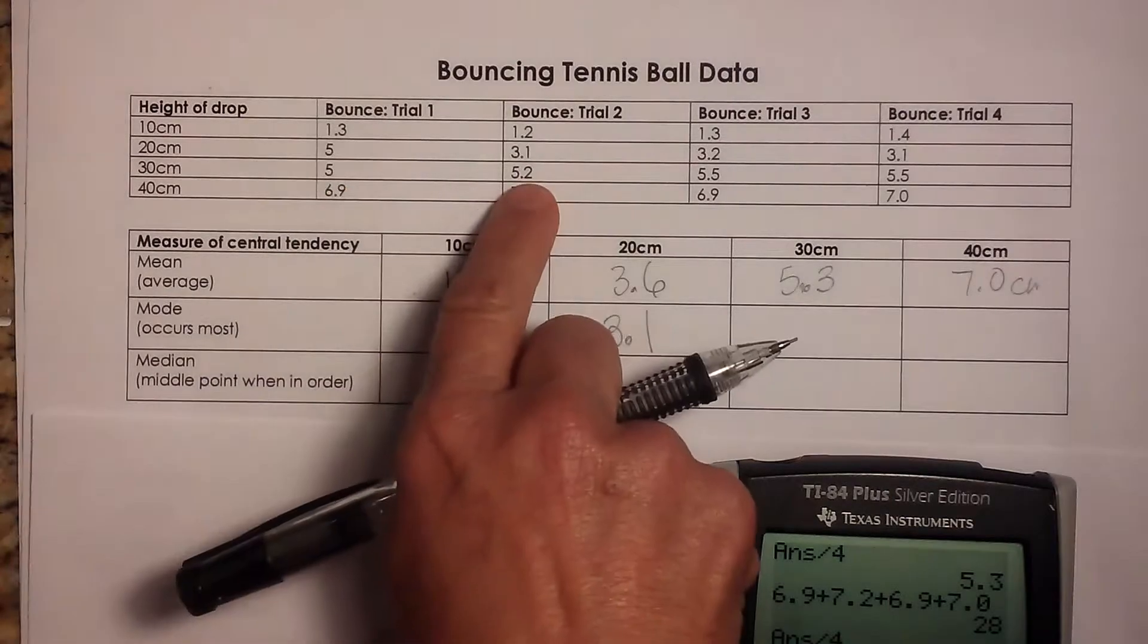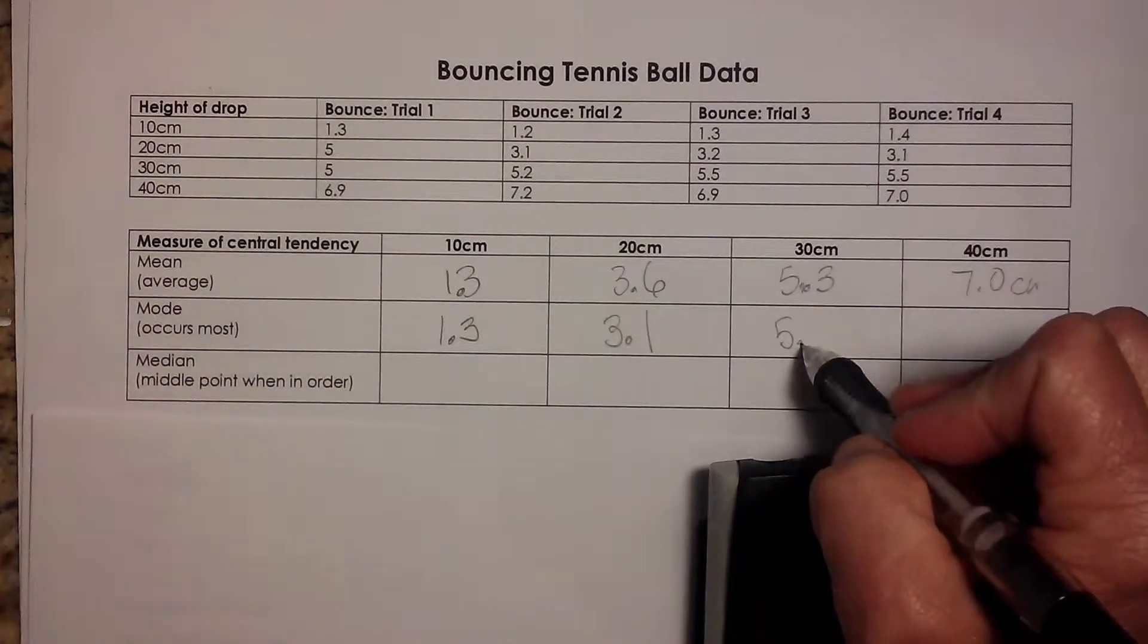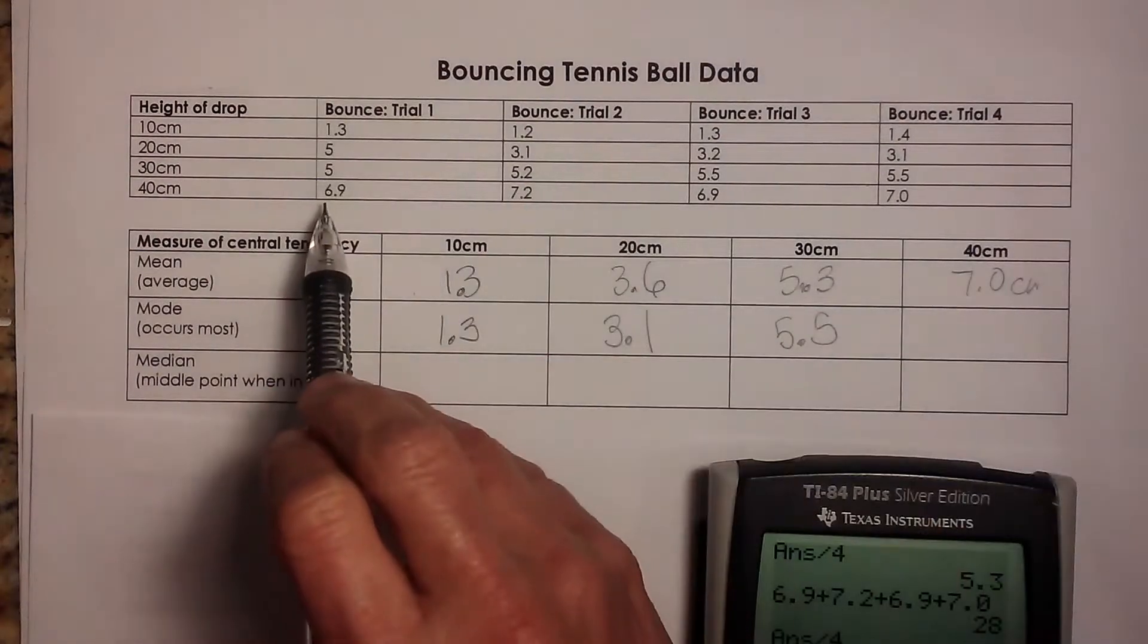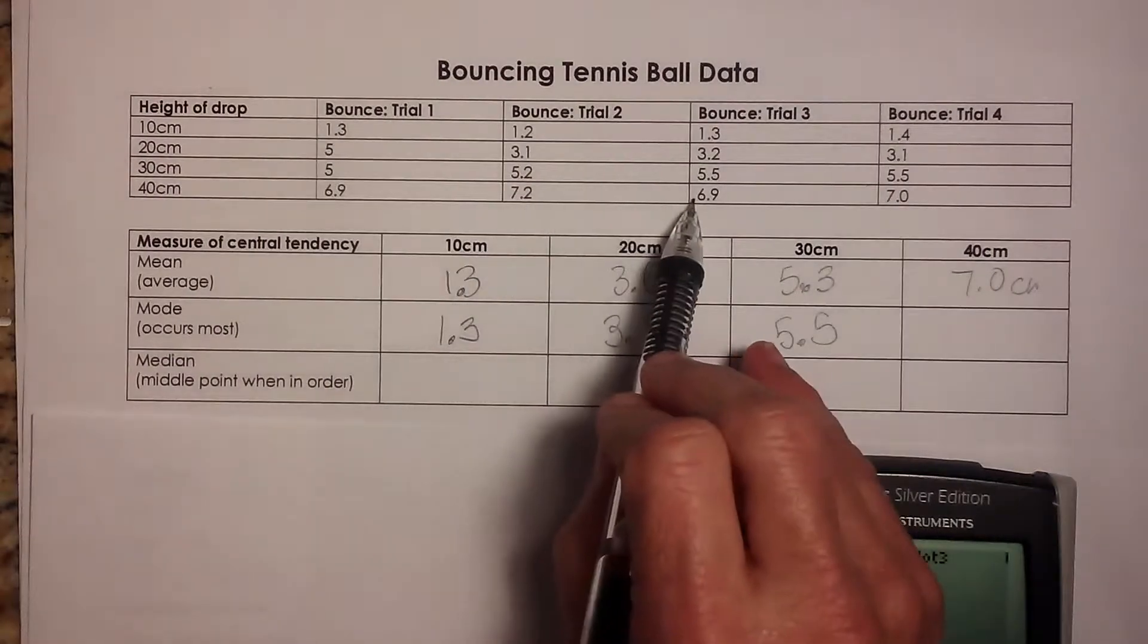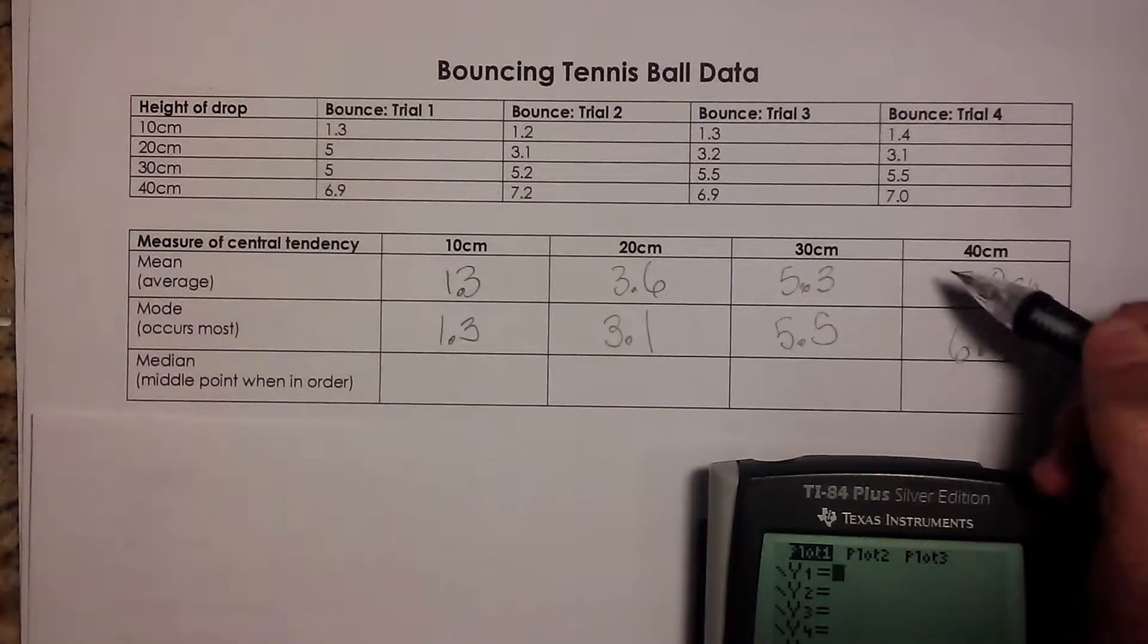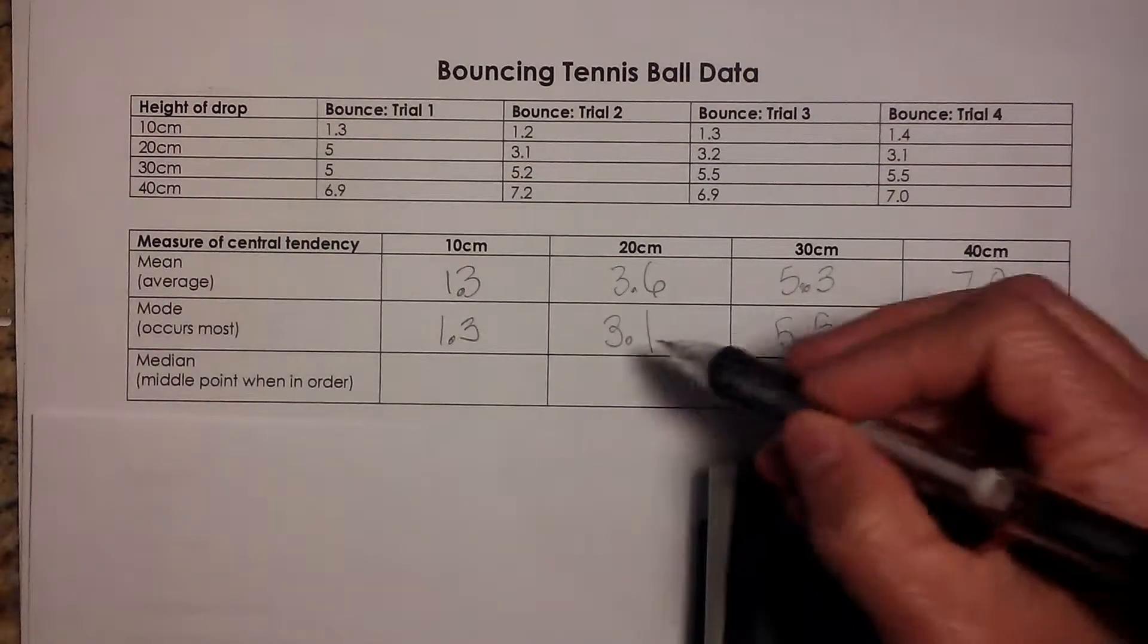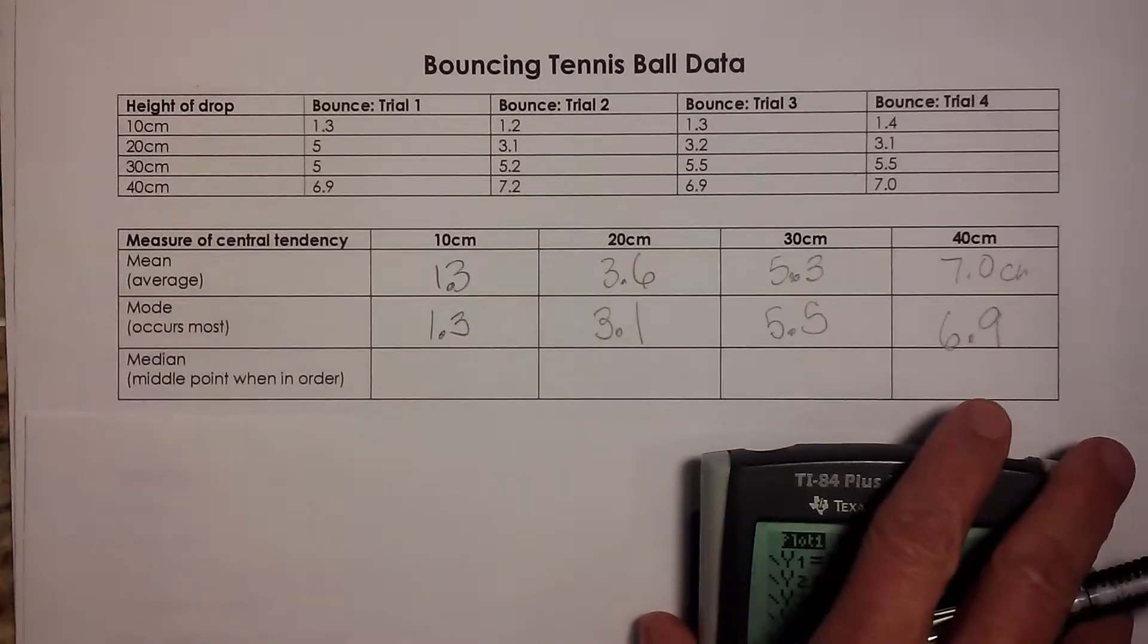From 30, it's 5, 5.2, 5.5, 5.5, so we have two at 5.5. And the last one, 6.9, 7.2, 6.9, and 7.0. So this one also has one. Now, if there had been a category that didn't have a repeating, we would just put none if no value occurs more than once.